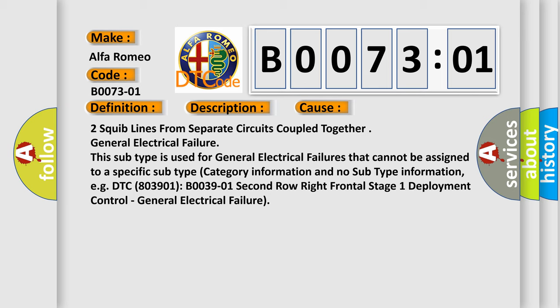This subtype is used for general electrical failures that cannot be assigned to a specific subtype. No subtype category information and no subtype information, e.g., DTC B003901 second row right frontal stage 1 deployment control, general electrical failure.